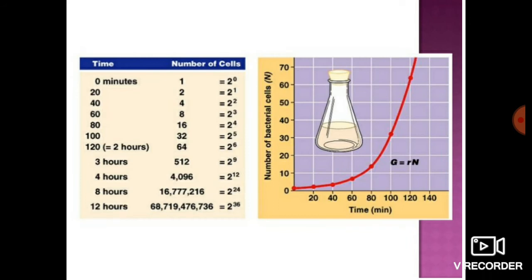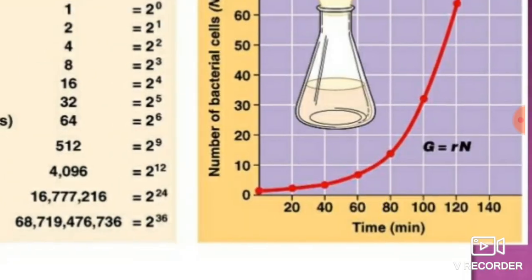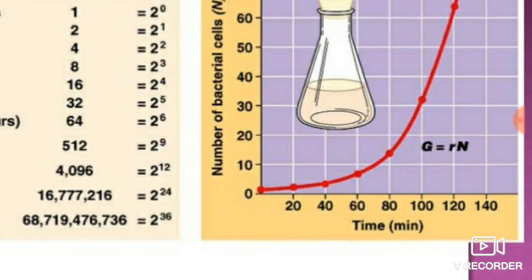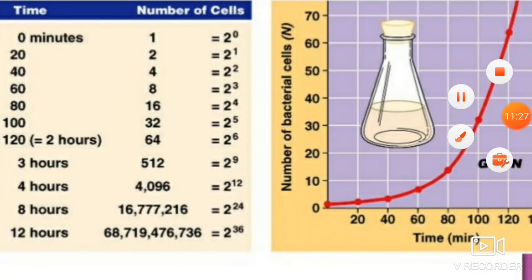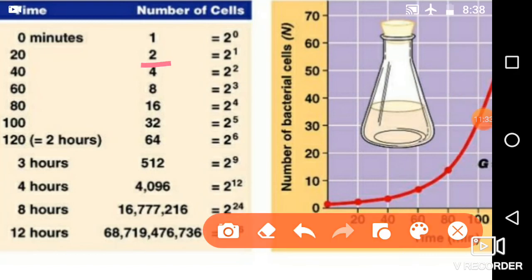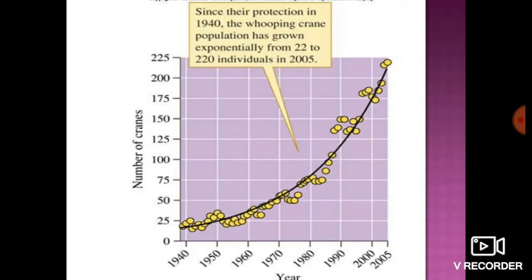As an example, we can see the number of bacterial cells increasing over time. At 0 minutes there was 1 cell, at 20 minutes there were 2 cells, at 40 minutes 4 cells, showing bacteria growing exponentially. Another example is the whooping crane — from 1940 to 2005, its population grew on the basis of exponential increase.